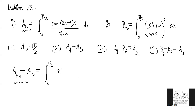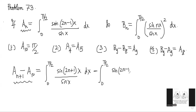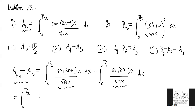aₙ₊₁ will be sin(2n+1)x divided by sin x dx, and we subtract the integral 0 to π/2 of sin(2n−1)x divided by sin x dx. The reason we subtract is that the fractions have the same denominator — only the numerator has changed. So we can combine them as a single integral: 0 to π/2 of [sin(2n+1)x minus sin(2n−1)x] divided by sin x dx.